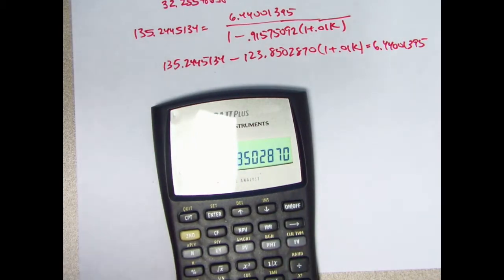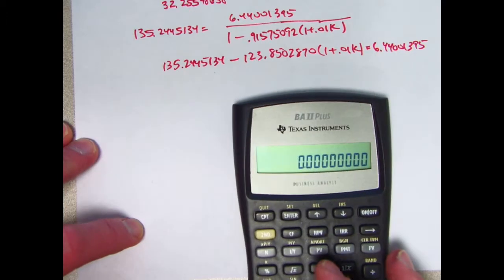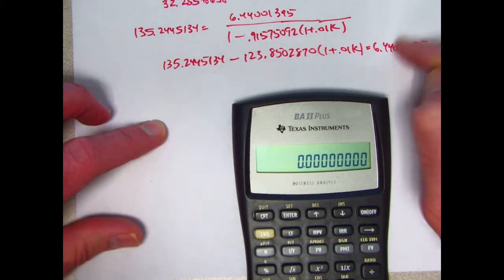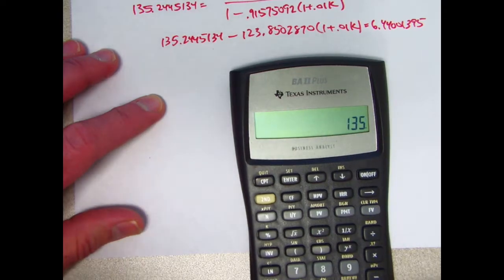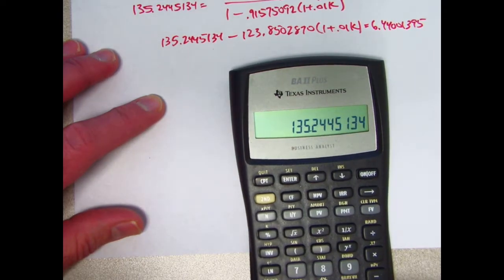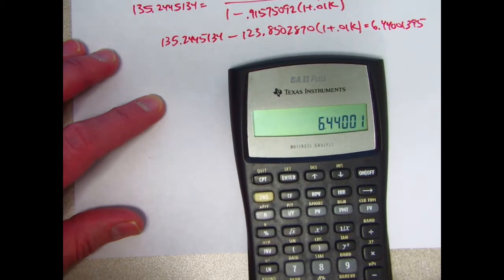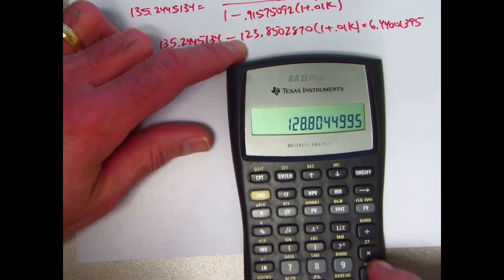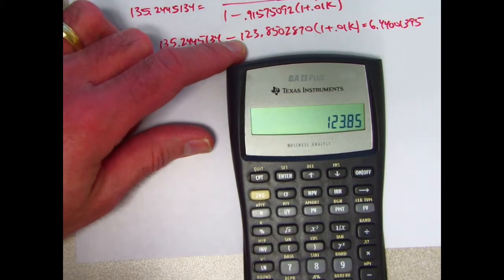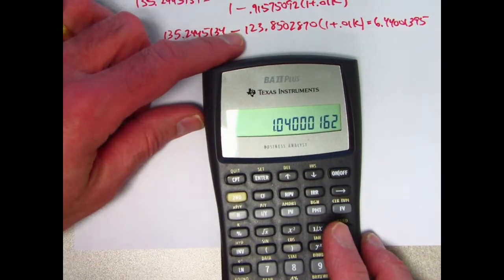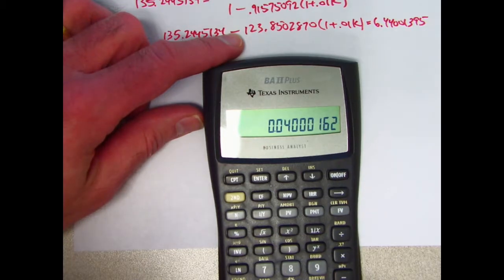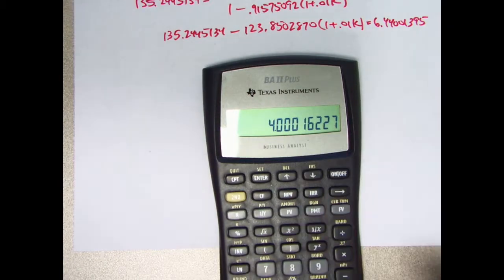So we get minus 123.8502870 times 1 plus 0.01k equals 6.44001395. Okay, let's do the rest on the calculator. Make sure you follow with me here carefully. I'm going to add this to both sides, get it on the right side with a positive sign. I'm going to subtract this from both sides. So with the calculator, let's do that first. 135.2445134 minus 6.44001395. I won't bother writing that down. That now needs to get divided by the 123.850287. That is the value of 1 plus 0.01k. Subtract 1 from it. That's the value of 0.01k. Multiply by 100. K is very close to 4. I'm sure as a multiple choice problem, probably would say the answer is equal to 4. And that is the answer.